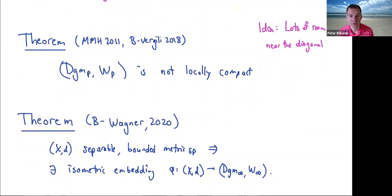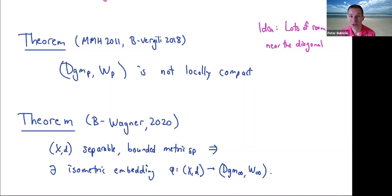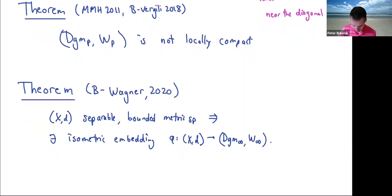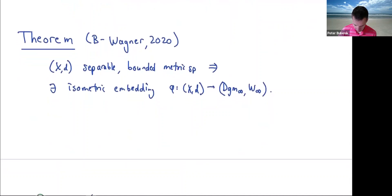Another result showing how big this metric space is, for the p equals infinity case: together with my former student Alex Wagner, now a postdoc at Duke, we showed that if you take any separable bounded metric space, it isometrically embeds into this metric space of persistence diagrams. The space is big — there's a huge family of things all isometrically embedded in there. This result will show up again later when we take advantage of it.